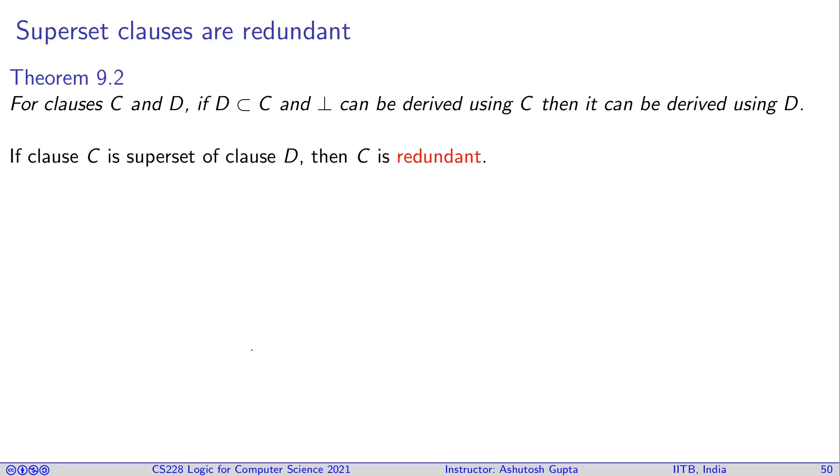So first thing to observe in theorem 9.2 is that if you have clauses C and D, and D is a strictly smaller set than C and false can be derived using C, you can derive the falsehood without using D, then it can be derived using D.